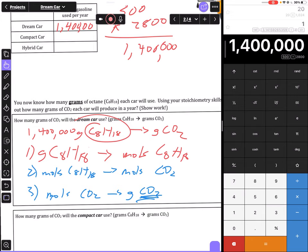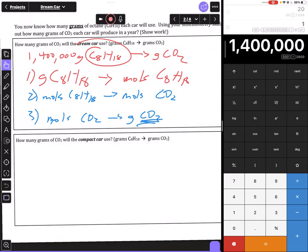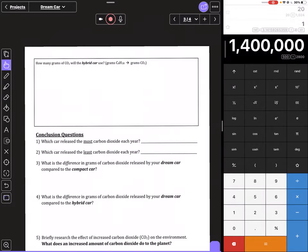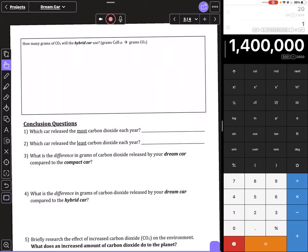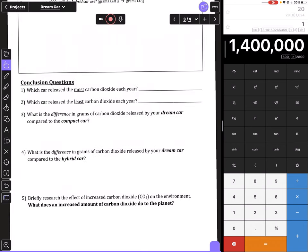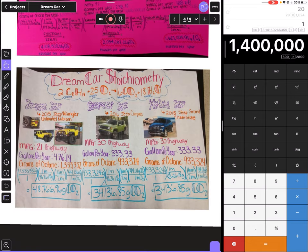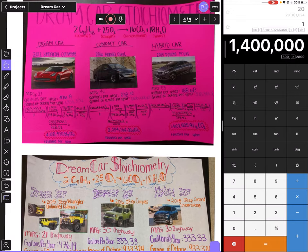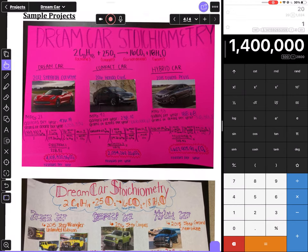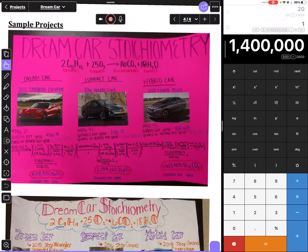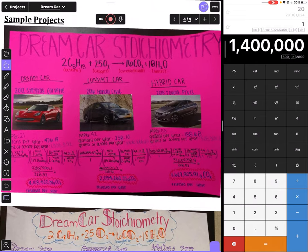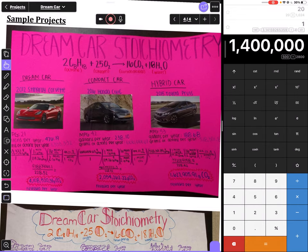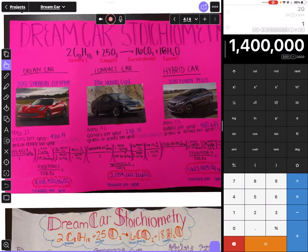Once you do that, you'll do the same thing for your compact car and then for your hybrid car - you'll do three steps, then answer your questions. After you're finished with all that, you will make a poster. The poster boards we've been using might not be big enough to do all this on - you might have to use a couple of them. You're going to include the name of the project, use the balanced equation, your three pictures of your cars labeled, and then all the information you used and all the stoichiometry that you did.